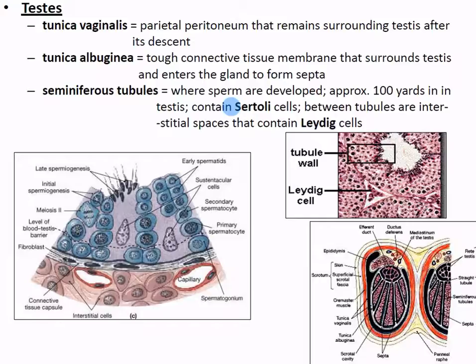When you look at the layers of the testis, an important thing to remember is that this is an immunologically privileged area - your immune system shouldn't get in there. If a boy doesn't make sperm until age 13, his developing immune system would try to destroy his own sperm if it could enter the testis, treating it as foreign. The important cells here are the Sertoli cells, which nurture and develop the sperm and form the blood-testis barrier.